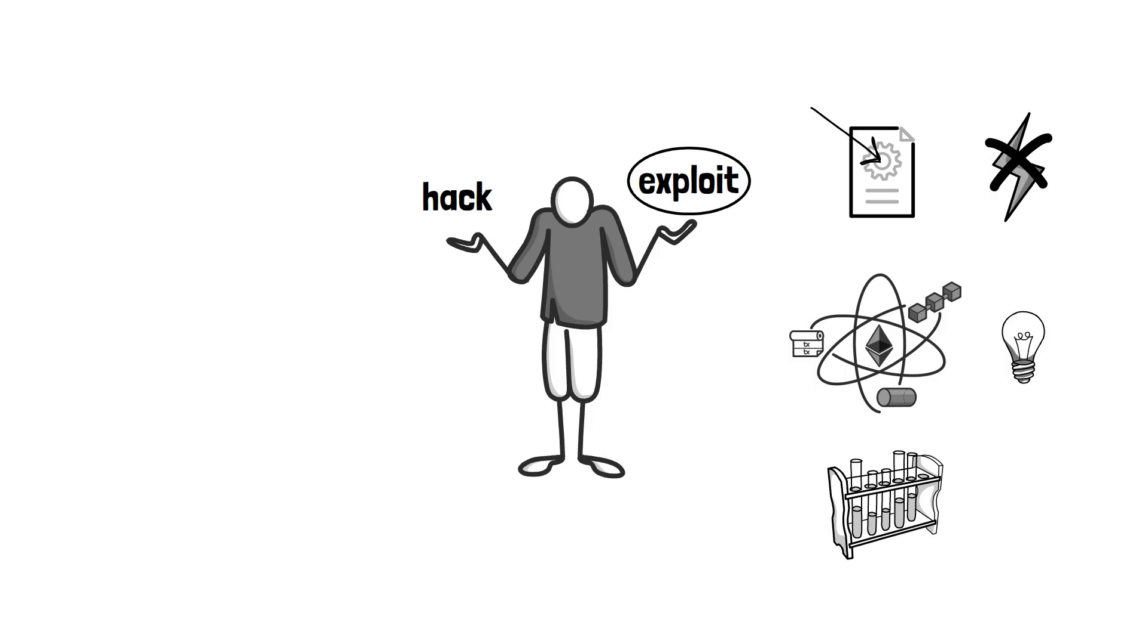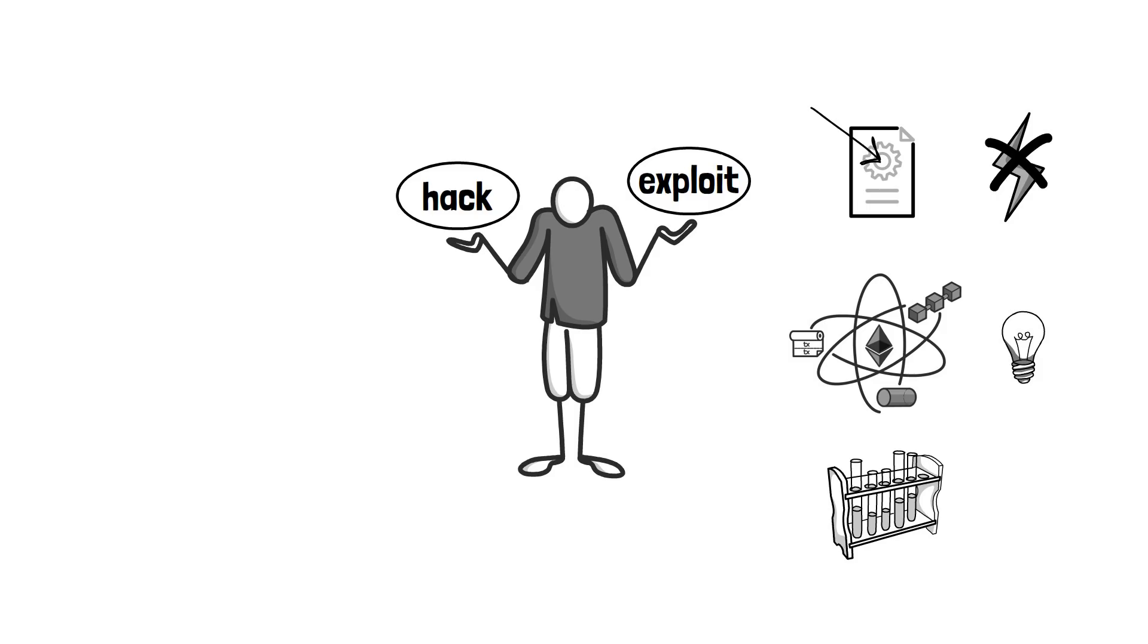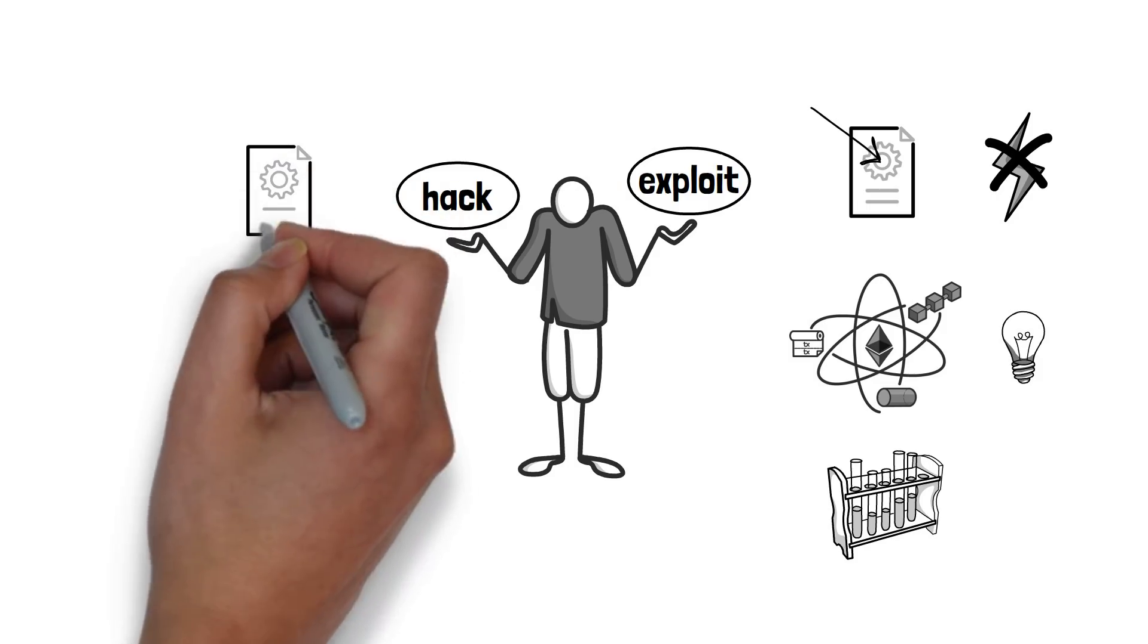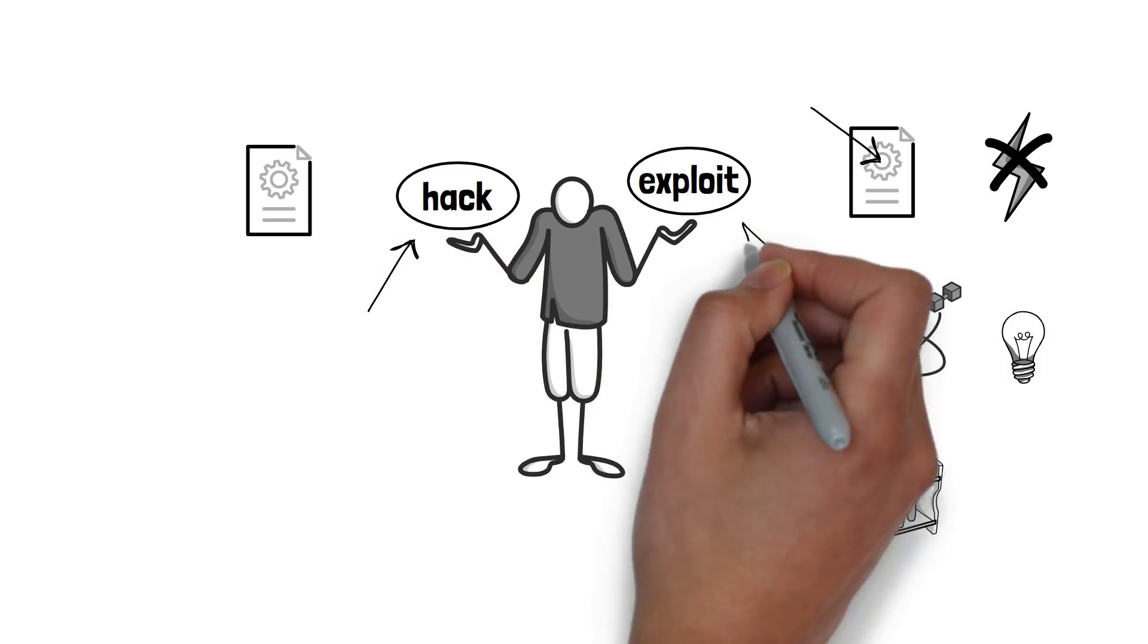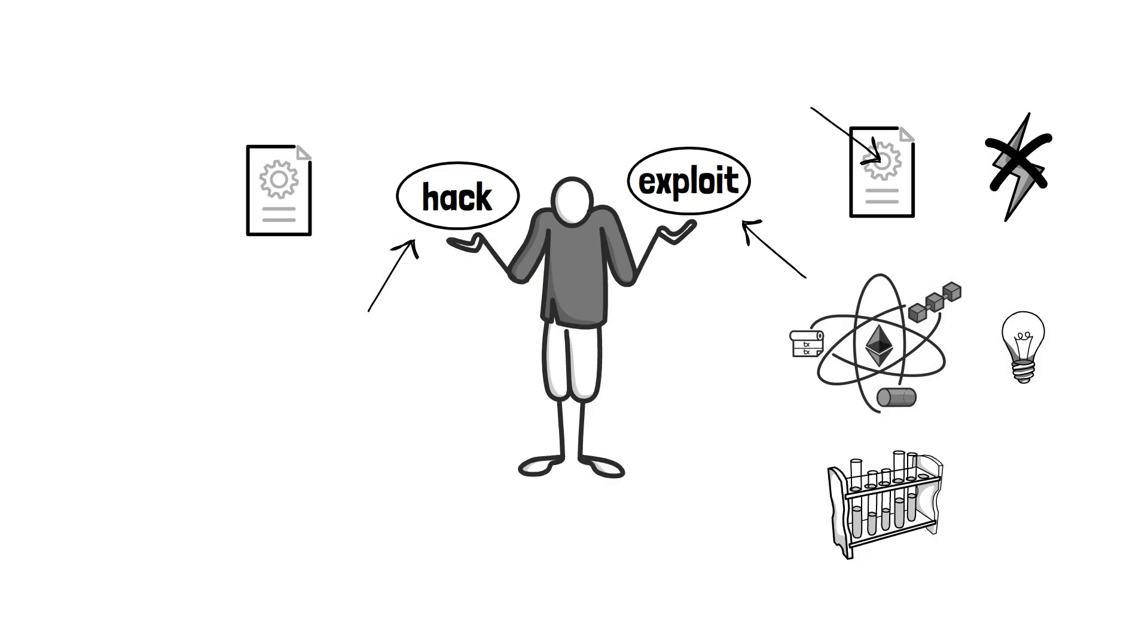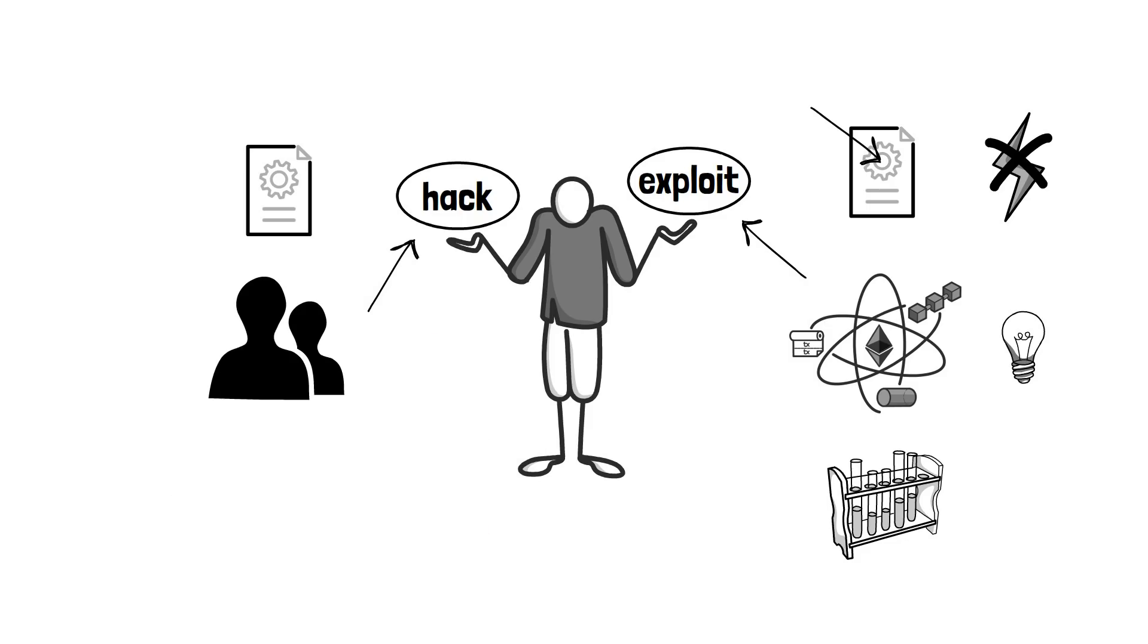However, this labeling could be applied to all hacks as they can only operate with the code that has been written. Whether we call them a hack or an exploit, the end result is the same. If loopholes exist, then eventually someone will take advantage of them and there is little we can do to stop this.